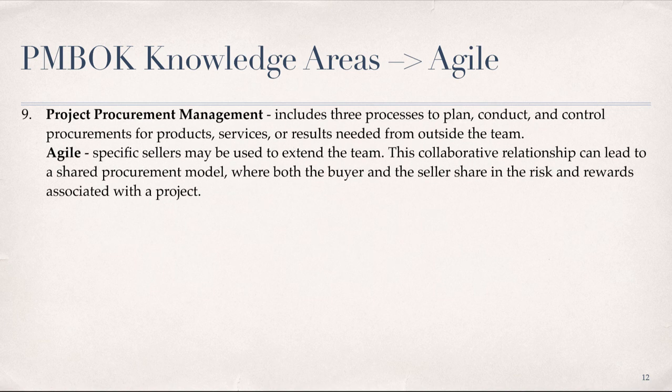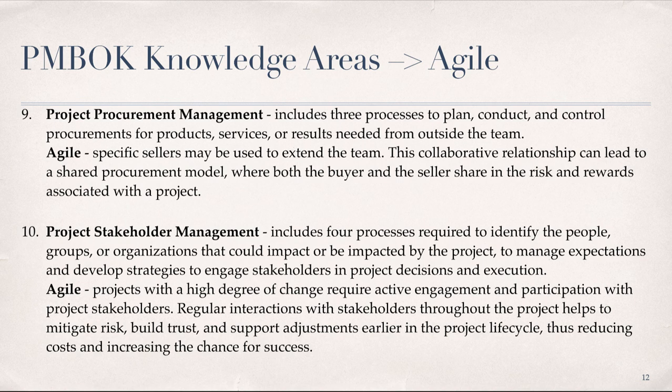Project Procurement Management includes three processes to plan, conduct, and control procurements for products, services, or results needed from outside the team. In Agile, specific sellers or vendors may be used to extend the team, and this collaborative relationship can lead to a shared procurement model where both the buyer and the seller share in the risk and rewards associated with a project. Finally, Project Stakeholder Management includes four processes required to identify the people, groups, or organizations that could impact or be impacted by the project, to manage expectations and develop strategies to engage stakeholders in project decisions and execution at all levels. In Agile, regular interactions with stakeholders throughout the project help to mitigate risk, build trust, and support adjustments earlier in the project lifecycle, reducing costs and increasing chances for success.